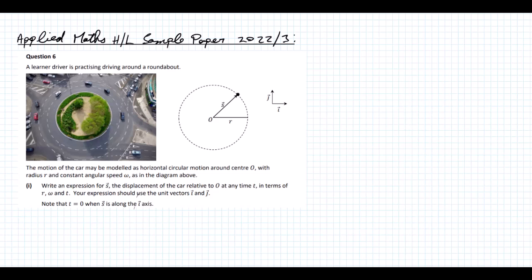Write an expression for S, the displacement of the car relative to O at any time T, in terms of R, omega, and T. Your expression should use the unit vectors I and J. Note that T is equal to 0 when S is along the i-axis.